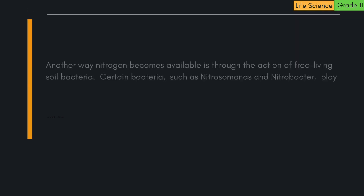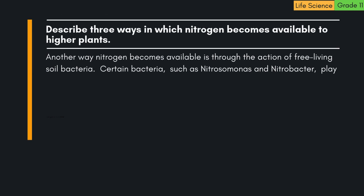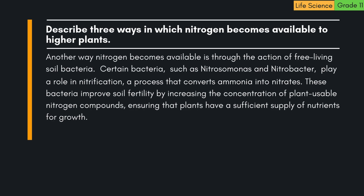Another way nitrogen becomes available is through the action of free-living soil bacteria. Certain bacteria, such as Nitrosomonas and Nitrobacter, play a role in nitrification — a process that converts ammonia into nitrates. These bacteria improve soil fertility by increasing the concentration of plant-usable nitrogen compounds, ensuring that plants have a sufficient supply of nutrients for growth.